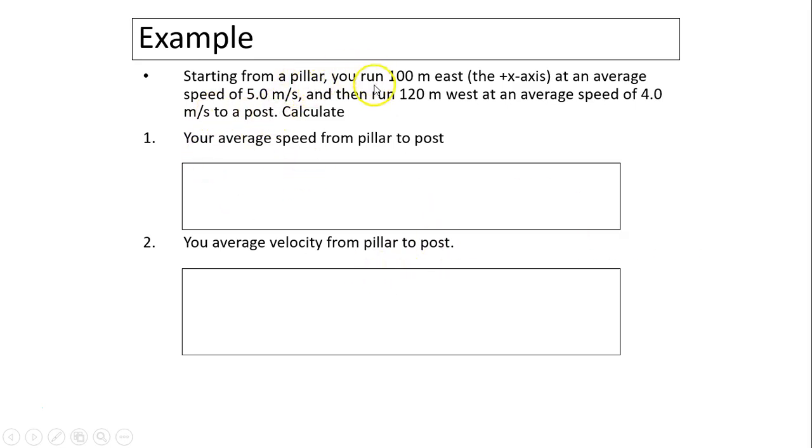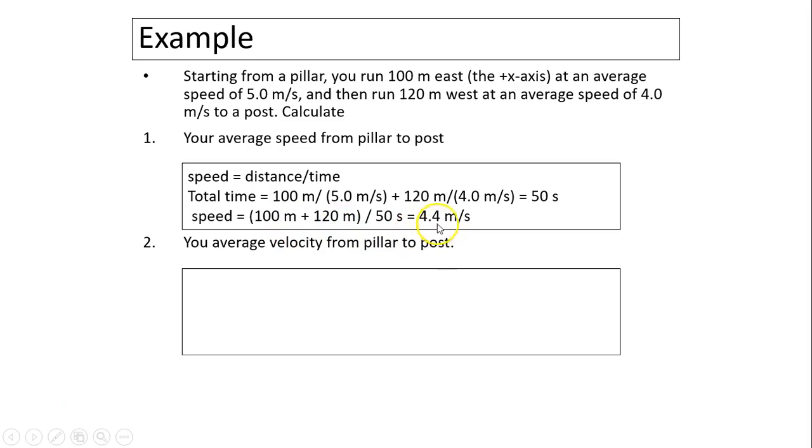Next example. Starting from a pillar, you run 100 meters east at an average speed of 5 meters per second. Then you turn around, run 120 meters west at an average speed of 4 meters per second to a post. Calculate what is your average speed. Well, average speed is total distance divided by total time. You know the total distance, 100 and 120, so 220 meters. What is the total time? Total time is the two parts added together. The first, when you run 100 meters, you know the time because you know 100 meters and the speed, so you can figure out the time. The second part, 120 meters, you know the speed, so you can figure out the time for the second part. Then you add the two together. So speed is distance over time. Total time is the first part, 100 divided by 5 plus 120 divided by 4, so you have 50 seconds. Now what is the total distance? 220 divided by 50, you have 4.4 meters per second.